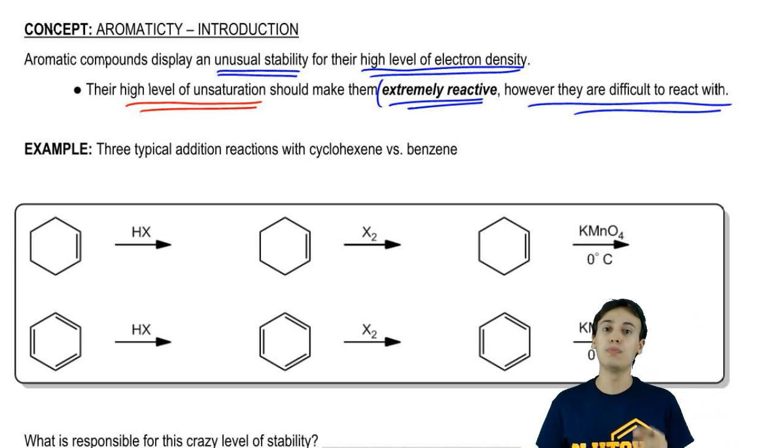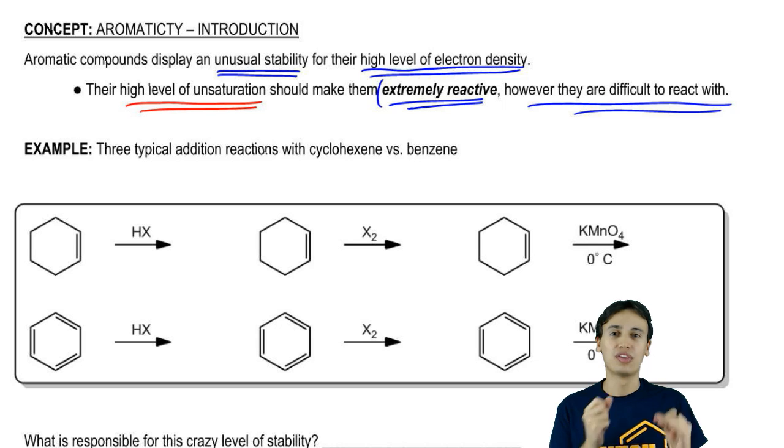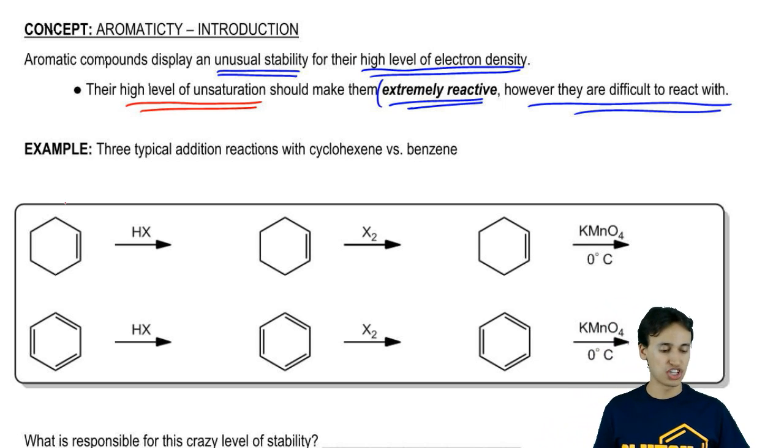Just so you guys know, you may or may not know these three reactions. My point here isn't to bust your you-know-what. It's just to give you an example of the way that benzene and aromatic compounds do not react the same way that double bonds do. This first reaction here, I'm not sure if you guys remember, was called hydrohalogenation.